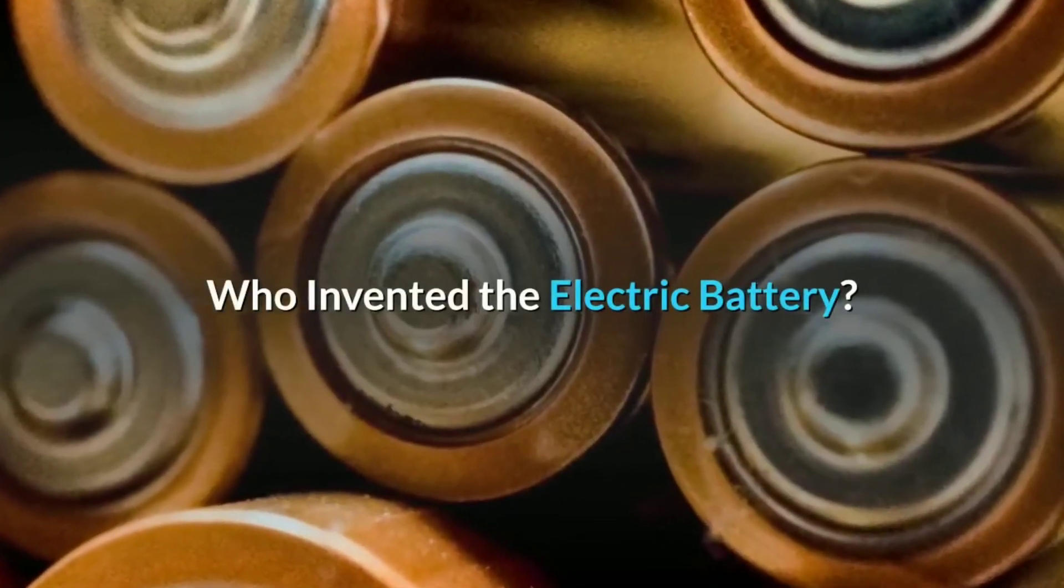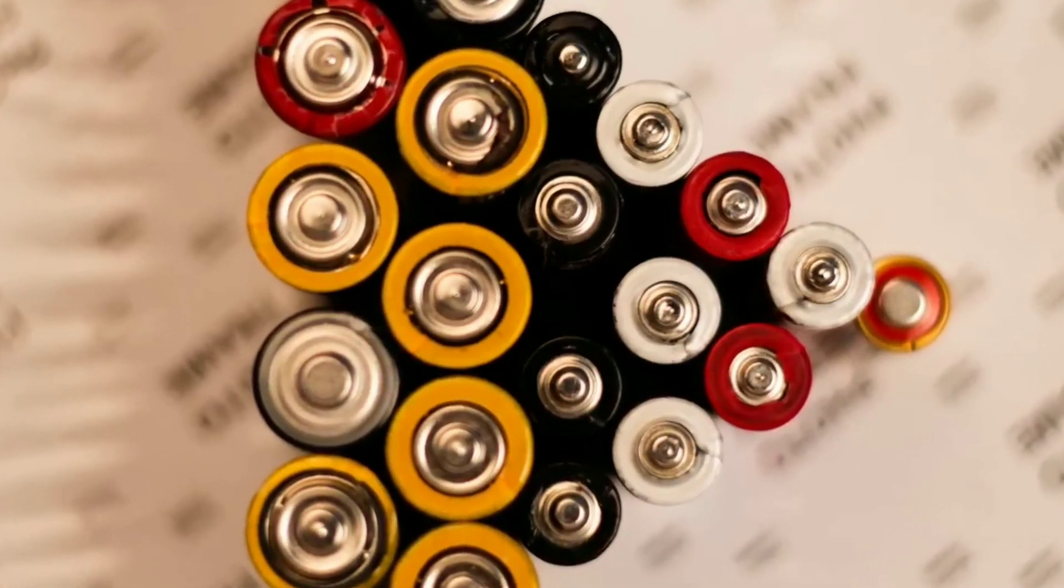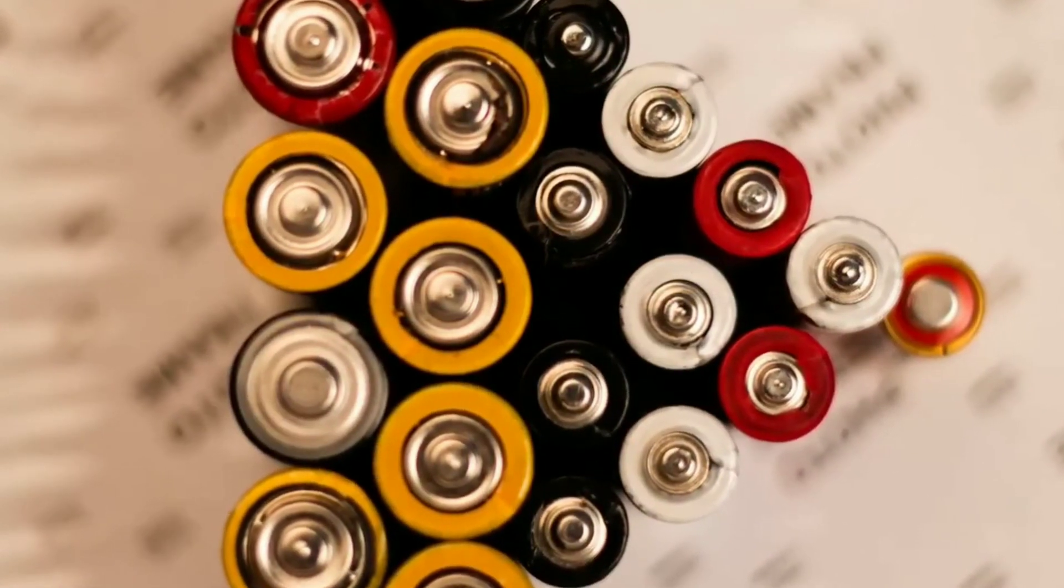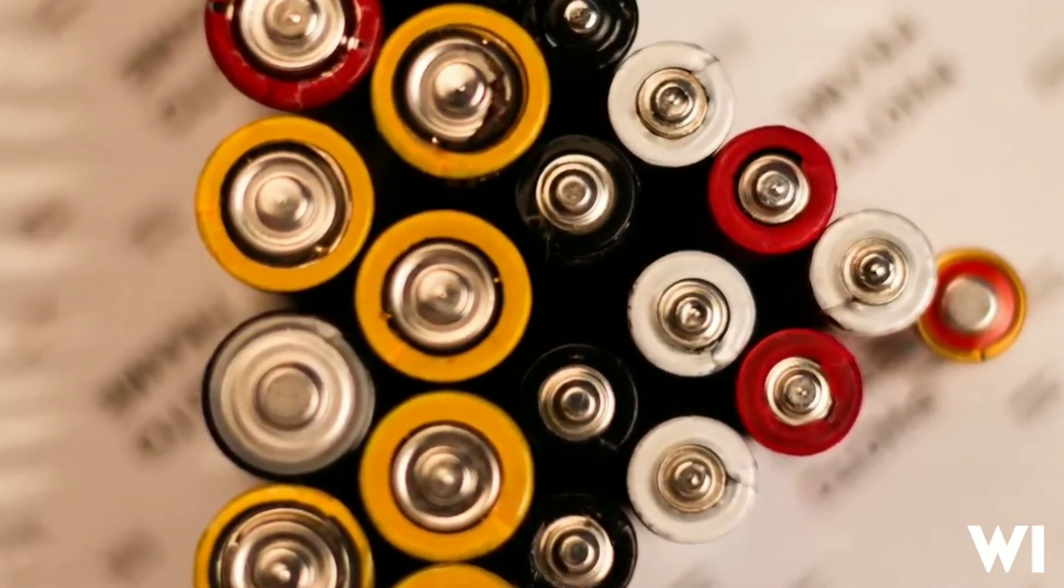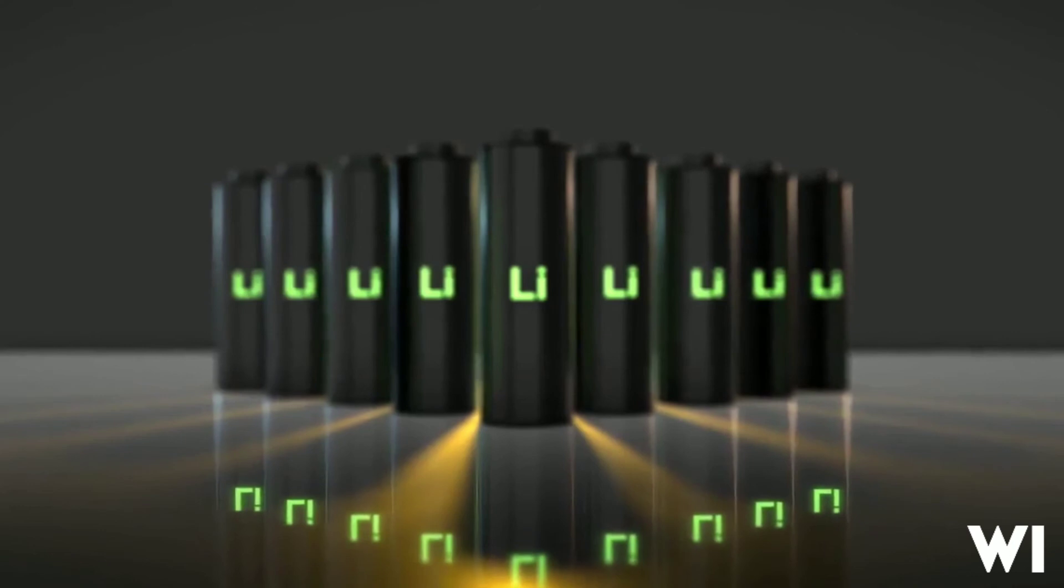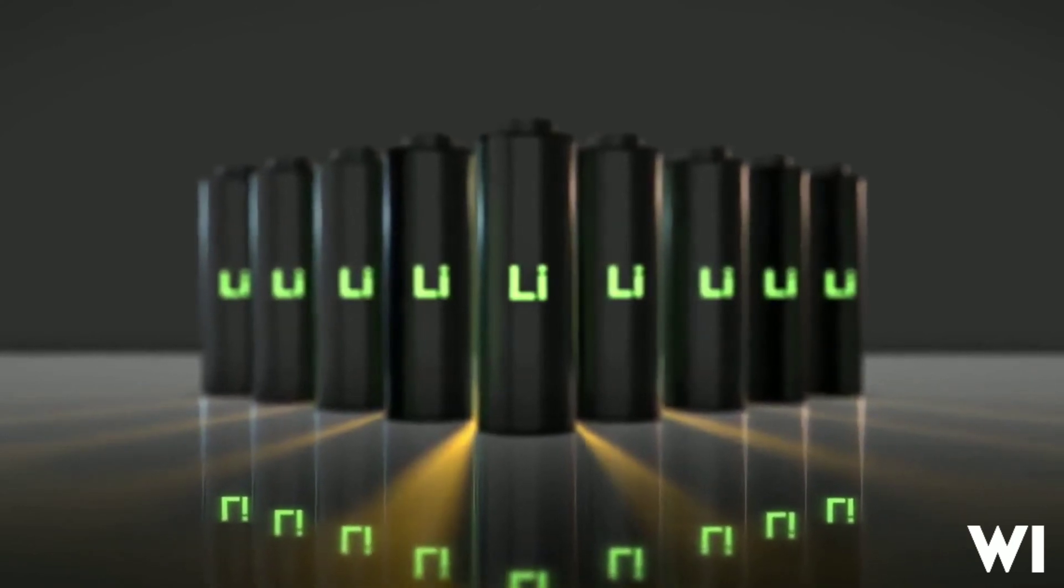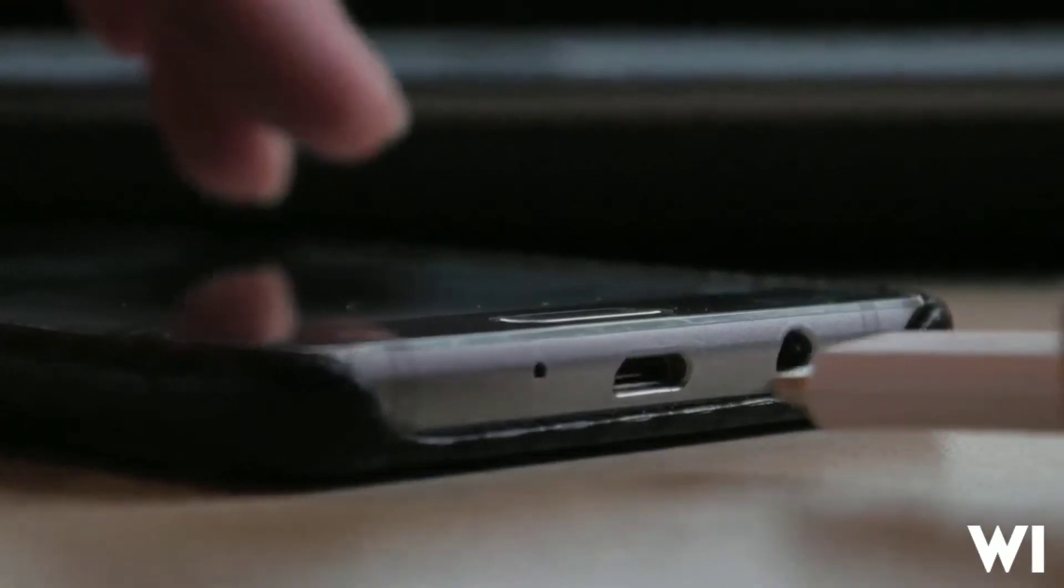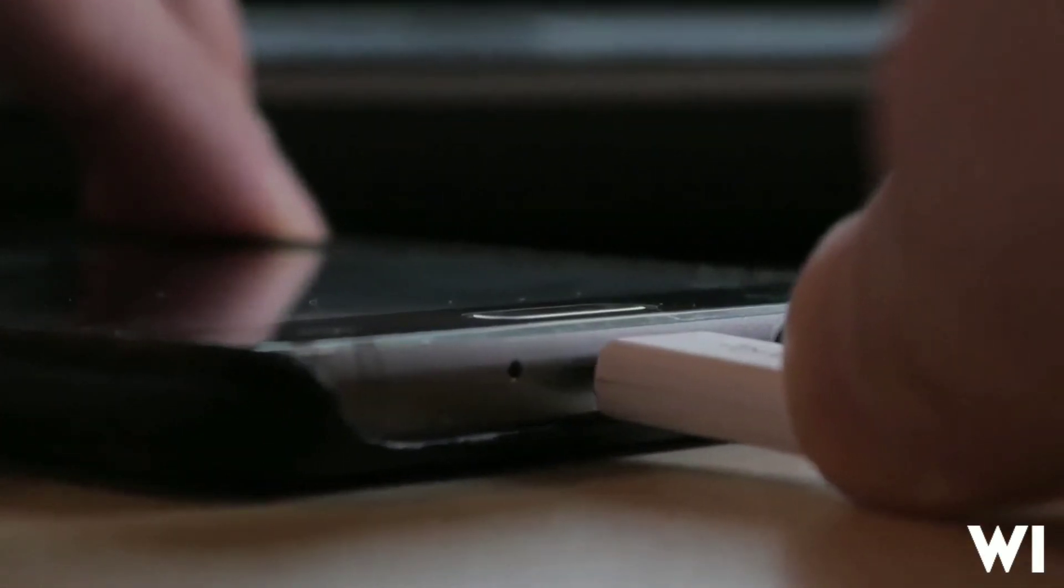Who invented the electric battery? Italian physicist Alessandro Volta invented the first electric battery in 1800. A battery is a device that generates electricity through a chemical reaction and was the main source of electricity before the invention of electrical grids and generators. Batteries are used for powering devices such as mobile phones, flashlights, and electric cars.